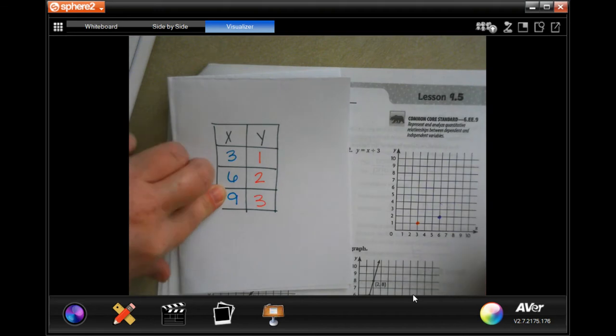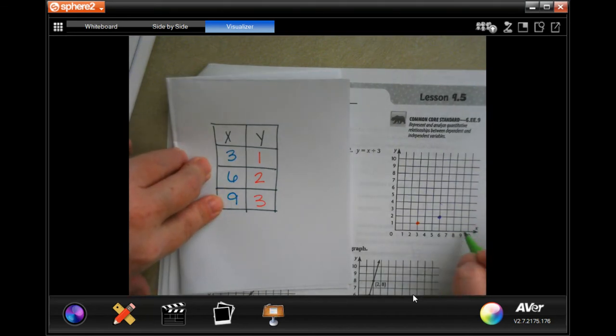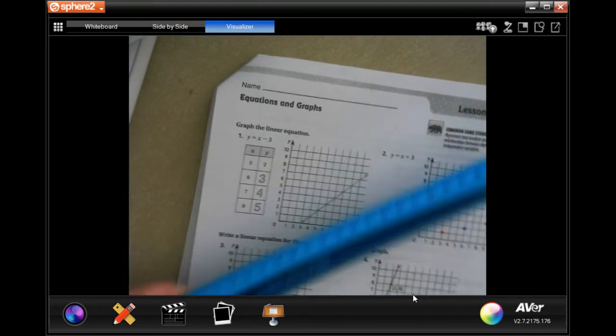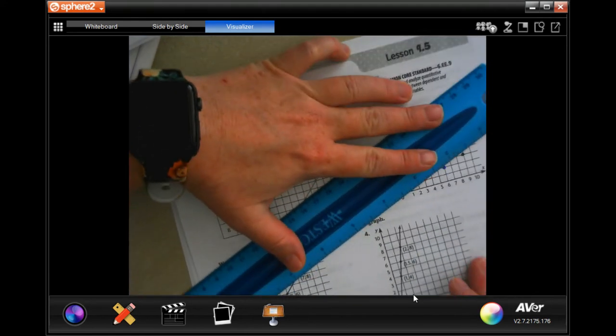Your third point is you're going to go over to nine and up to three. Now on these you want to make sure that you always have a ruler, so that y'all can line those up.